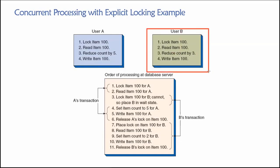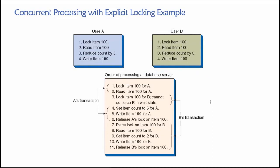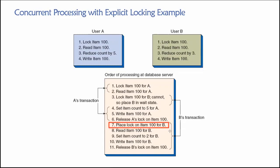The inventory level for item number 100 is now available to be used by other transactions, and we have another transaction from user B that's been waiting. The database will immediately begin processing user B's request. User B begins by locking the inventory level for item 100, reads the inventory level, and reduces whatever it is by three, makes that change permanent, then unlocks it so that it can be used by other transactions.